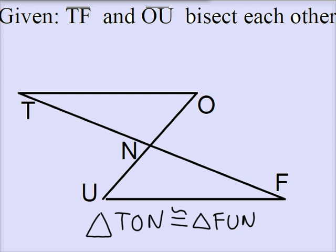We want to first prove T-F and O-U bisect each other. What does that mean? This word bisect means cut in half. So T-F and O-U cut each other in half.